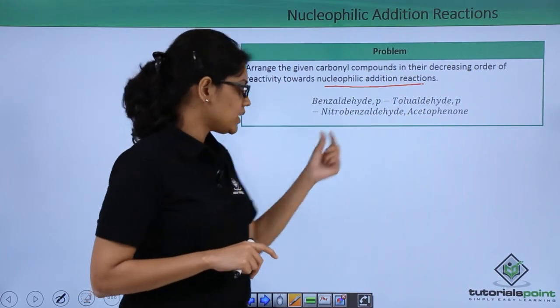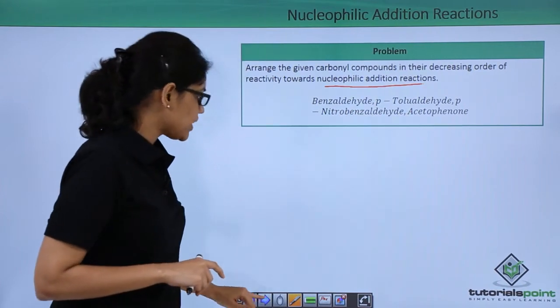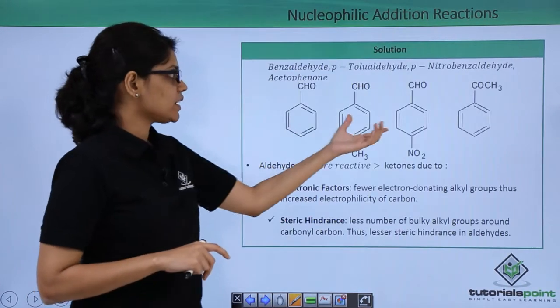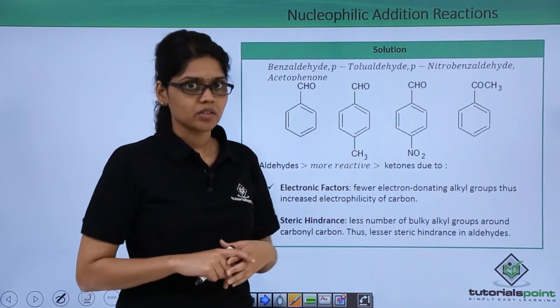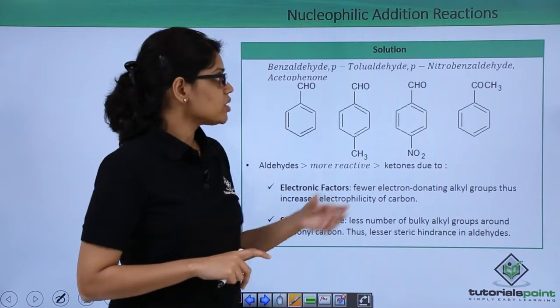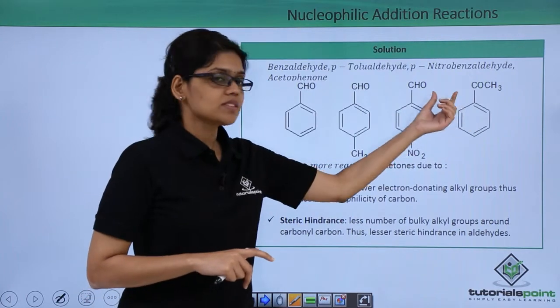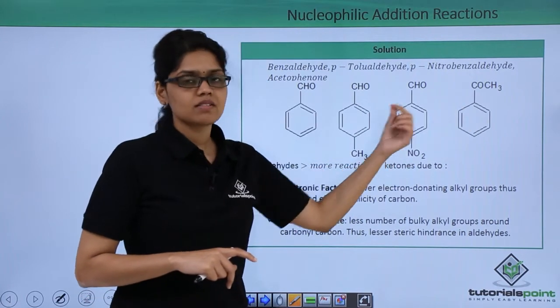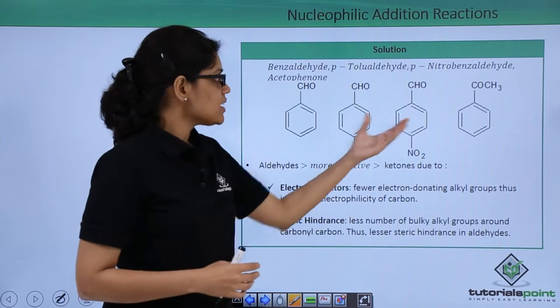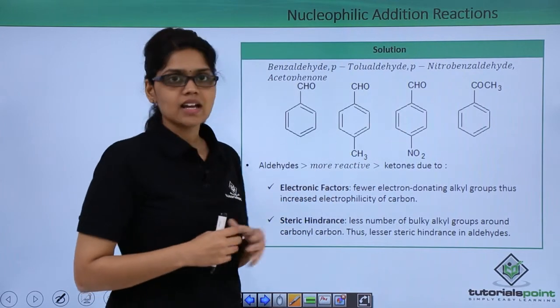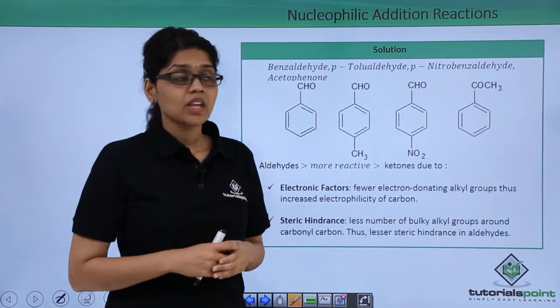Benzaldehyde, para-tolualdehyde, and paranitrobenzaldehyde, as shown here — the structures are given here. Because acetophenone is a ketone, it will be lowest in reactivity towards nucleophilic addition reaction as compared to these aldehydes.